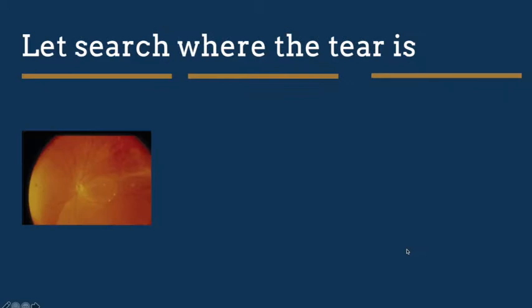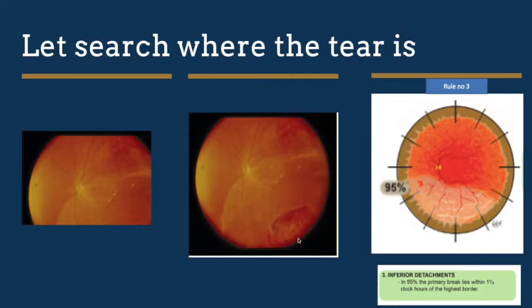For another example: if fundoscopy shows an inferior detachment, locate which border is the higher border by looking at the border adjacent to the optic disc. If the temporal border is higher than the nasal border, the tear must be within the temporal retina. This is Lincoff rule number three. In another case showing corrugated retina temporally located with a Y-streak — indicating PVD-related detachment — the tear is within the upper border of the detached area.